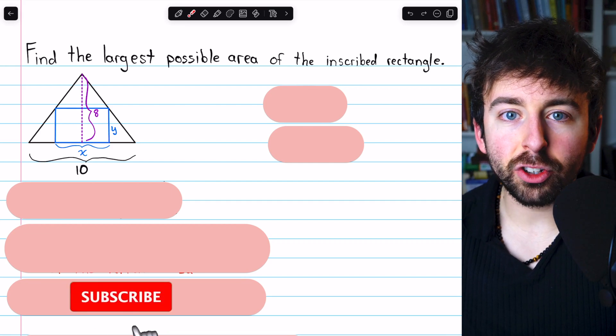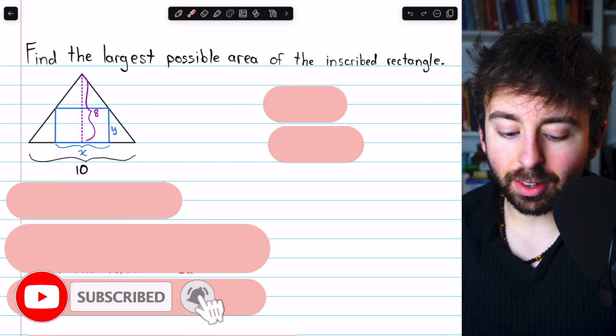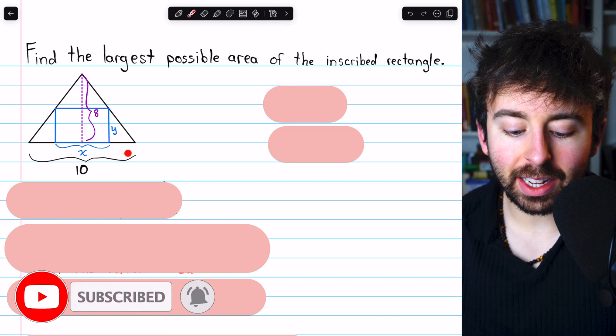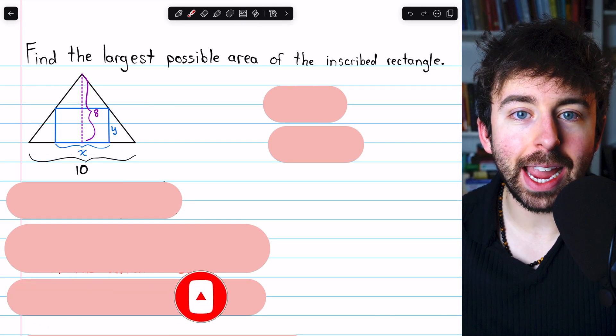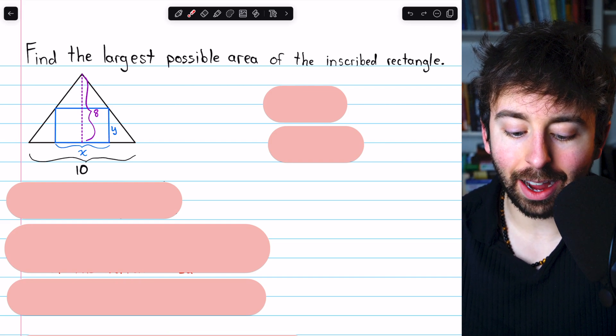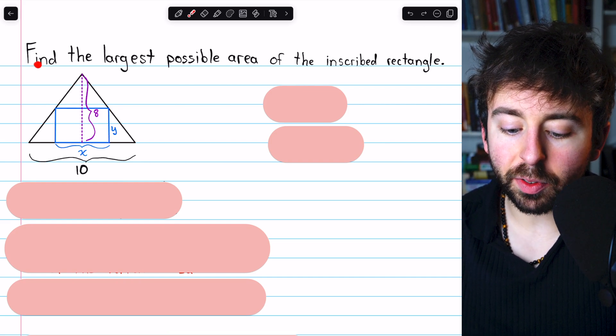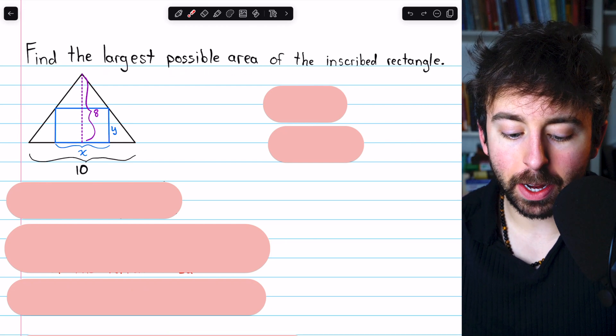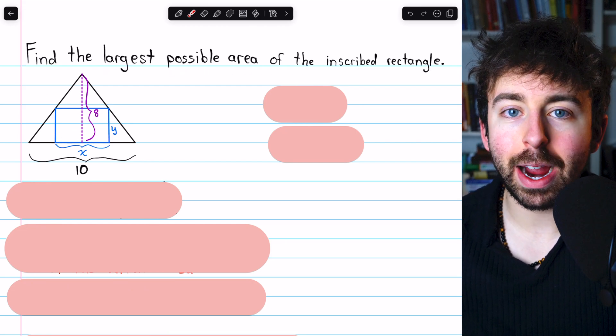Let's solve this challenging algebra problem. We have an isosceles triangle with a base length of 10 and a height of 8, and we have an inscribed rectangle with dimensions x by y. We want to find the largest possible area of the inscribed rectangle.